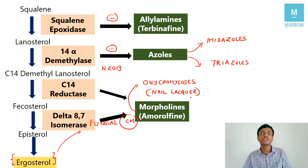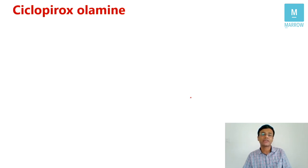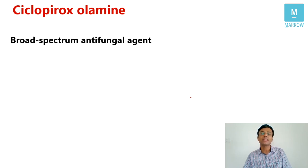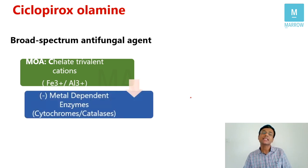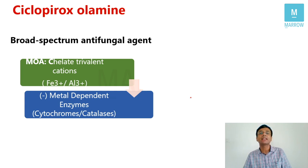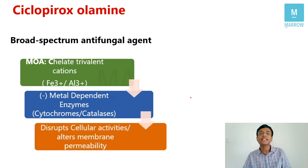Apart from these drugs, there is another important antifungal with a unique mechanism: ciclopirox olamine. It is a broad-spectrum antifungal that works by chelating trivalent metal cations — Fe³⁺ and Al³⁺. Once these ions are chelated, metal-dependent enzymes like cytochromes and catalases get inhibited. These enzymes are critical for cell activity, so their inhibition disrupts cellular activities and alters membrane permeability as well.